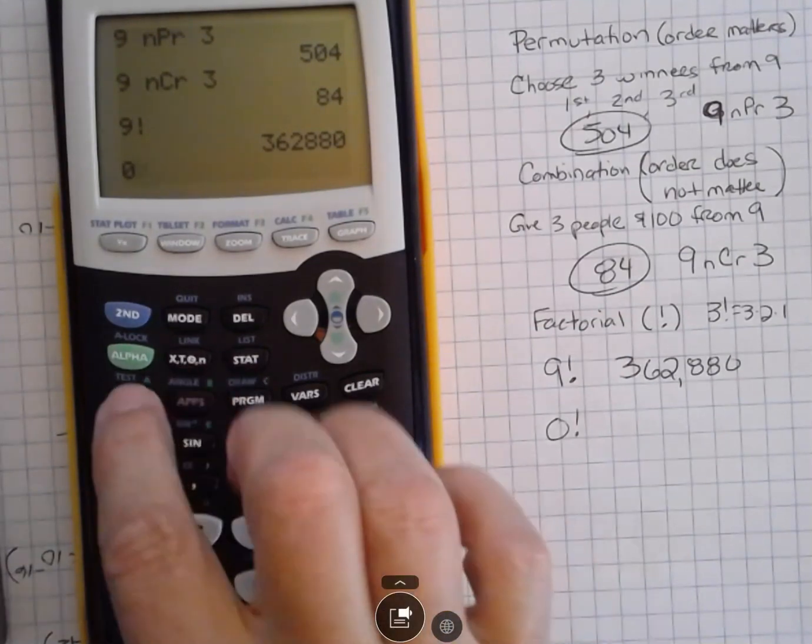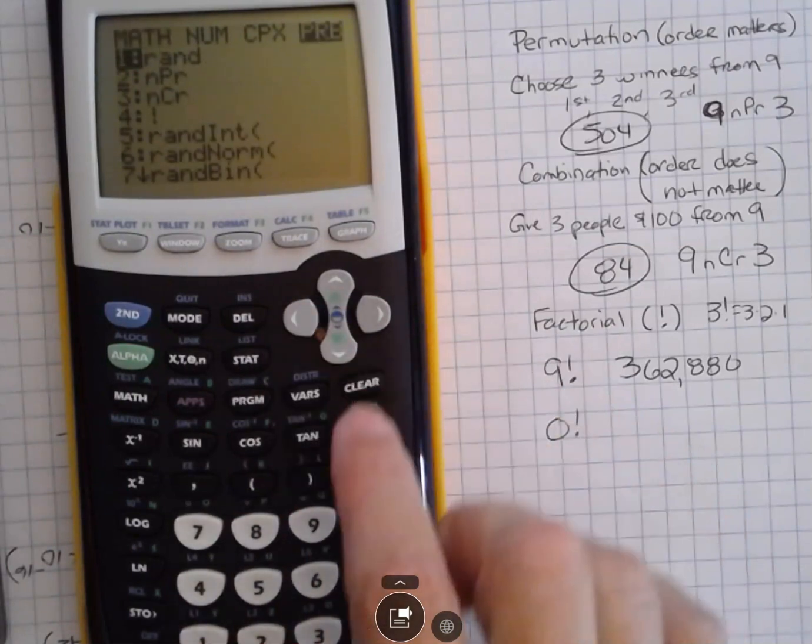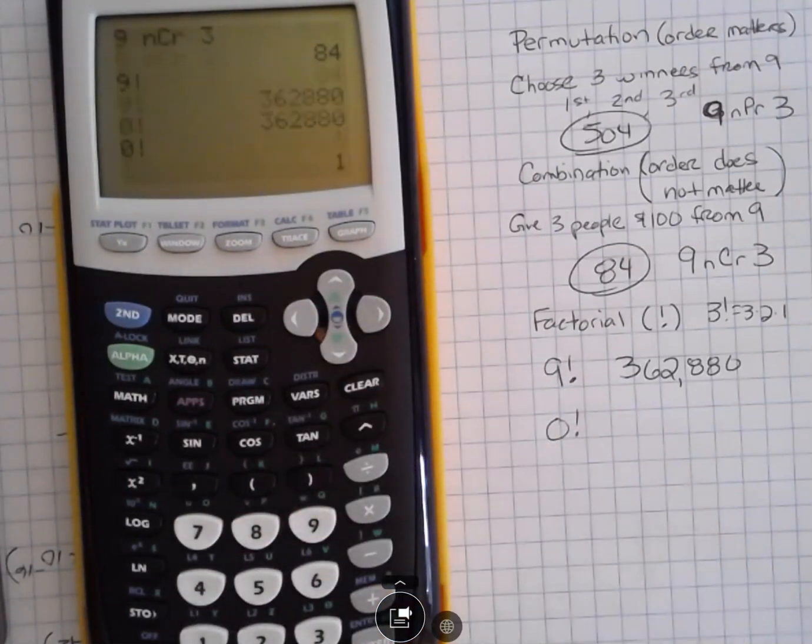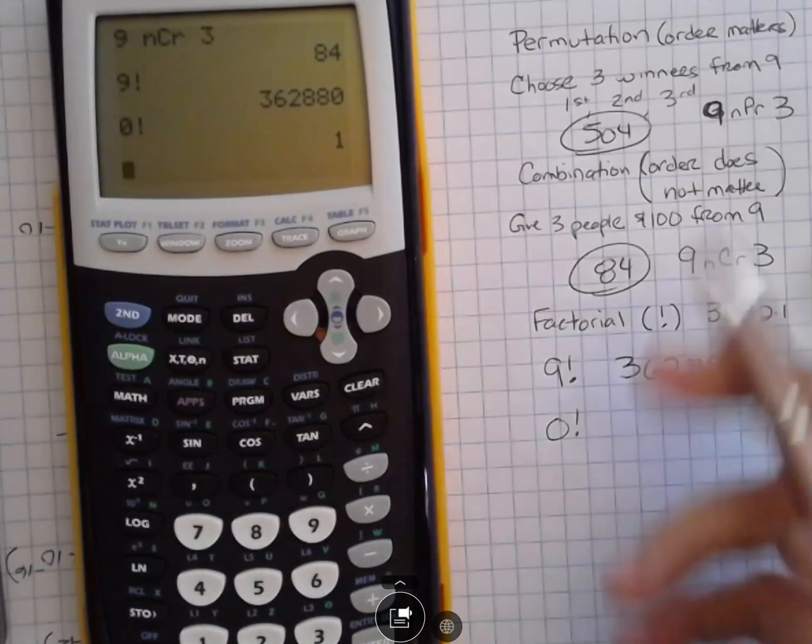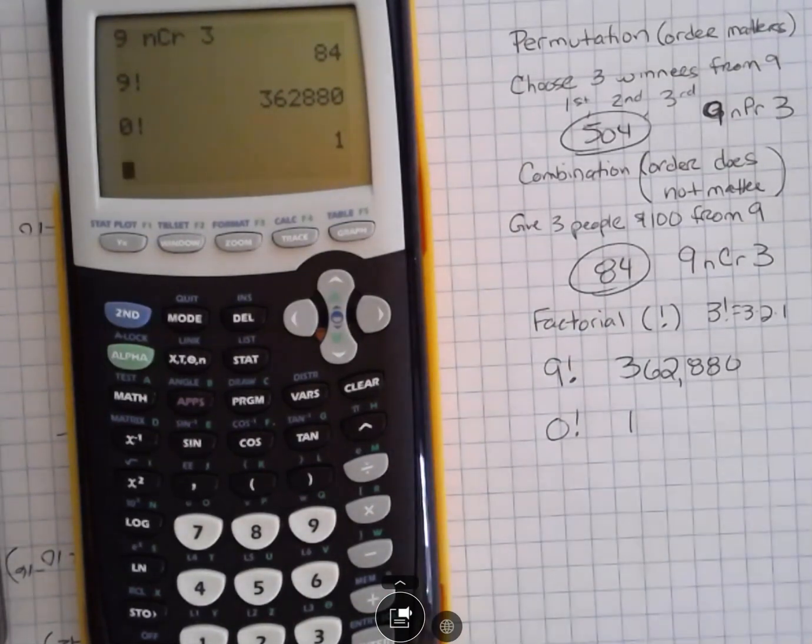So if I do zero math probability, and that was number four on the list, I'm going to hit enter. It gives me one. So this is something to remember. Zero factorial always equals one.